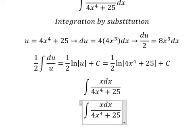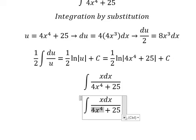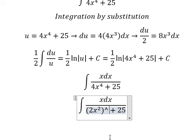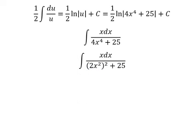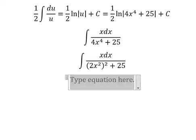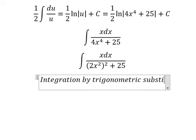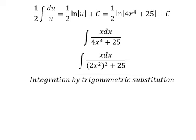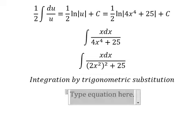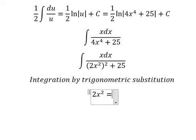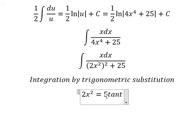We can write 2x squared, everything to the power of 2. We can use integration by trigonometric substitution. I will put 2x squared equals to 5 tan(t).